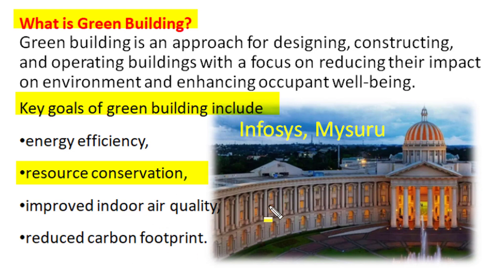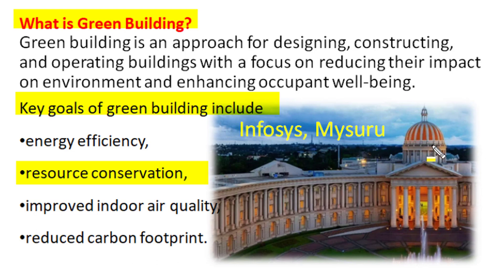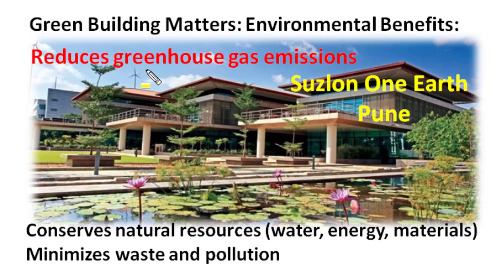Other key goals include improvement of indoor air quality and reduction of carbon footprints from building construction and operation. The Infosys campus in Mysuru is one such building which is very energy efficient, has its own solar photovoltaic generation, has used long-lasting natural materials, and in its design, construction and operation has achieved improved indoor air quality and reduced carbon footprints on the environment.